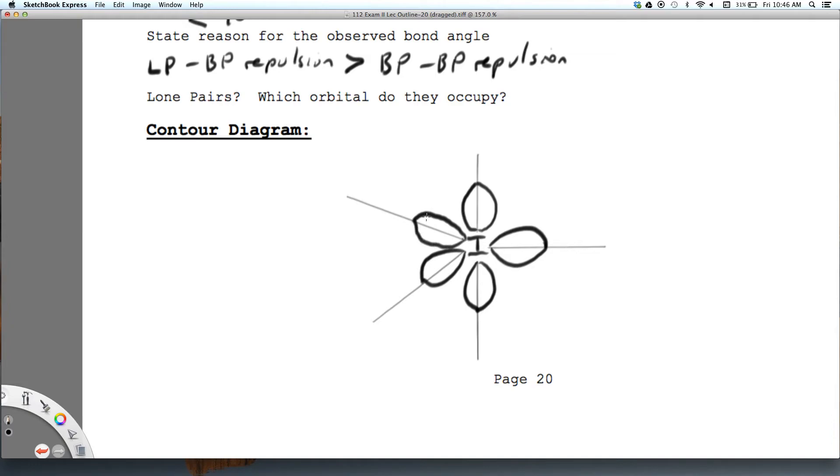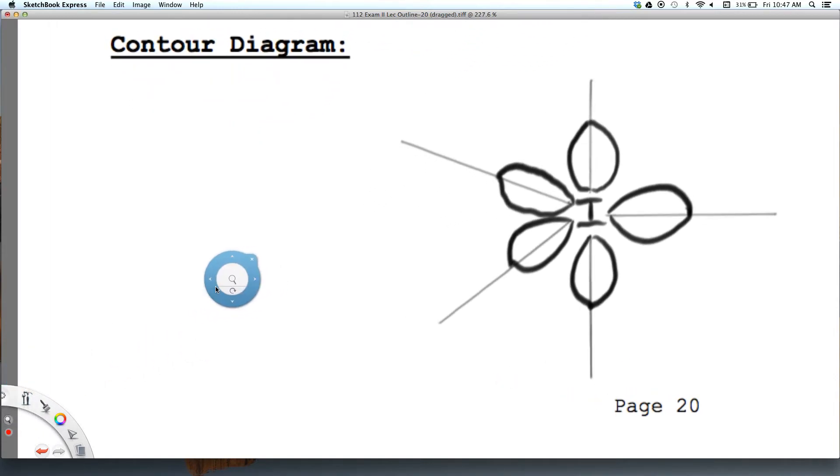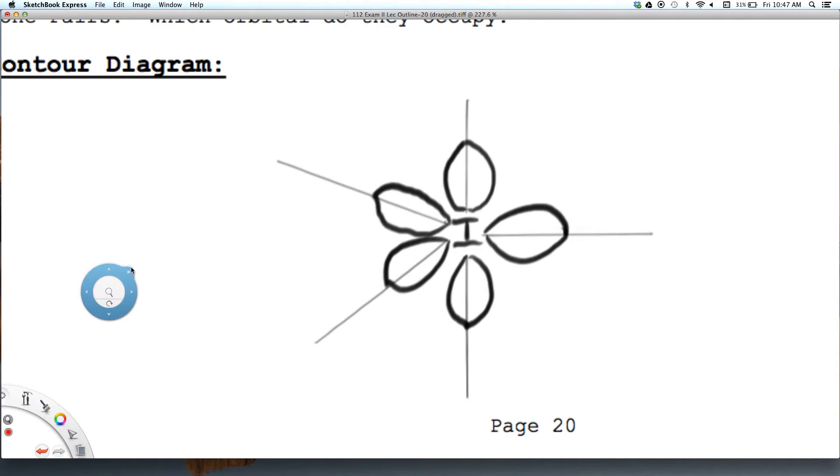Okay, and so there is our sp3d. And so now I am going to zoom in a little bit here so I can write those sp3d. It is a lot to write in that little orbital but we want to make sure they are labeled.